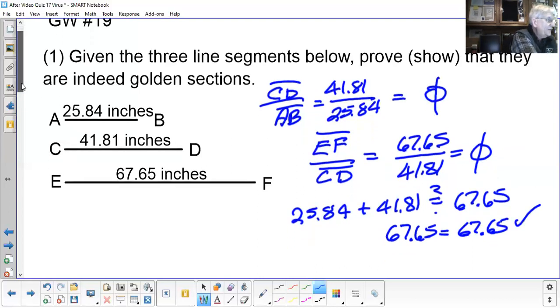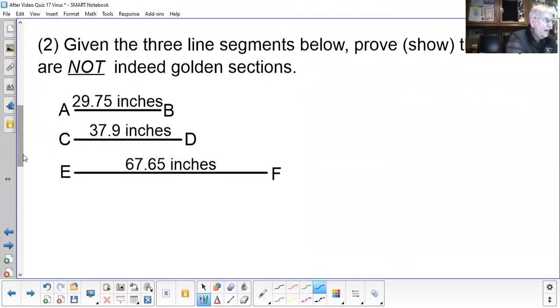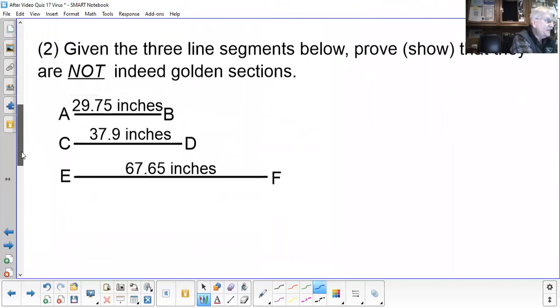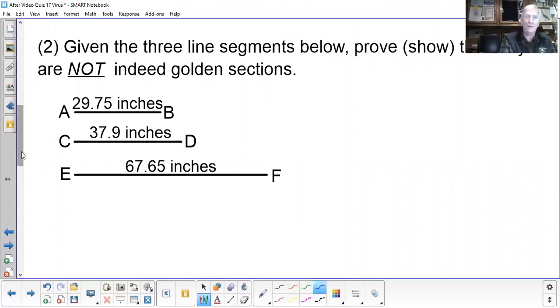Now let's go down to the second problem. Are these golden sections? We want to prove that whether they are or not. So to do that, I'm simply going to, well maybe I should check the lengths out first. If I take 29.75, the shortest one, add to it 37.9, will I obtain 67.65? Well, if you take your calculator and clear it, 29.75 plus 37.9, you do get 67.65.